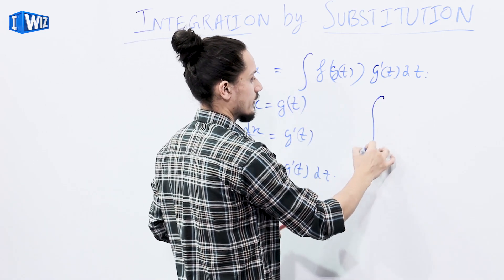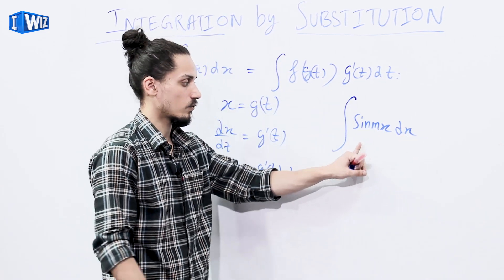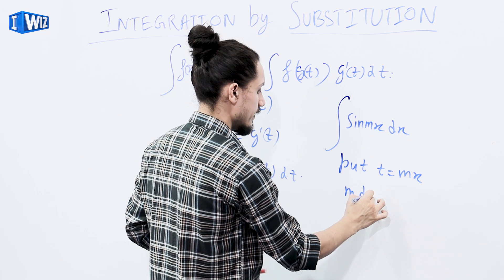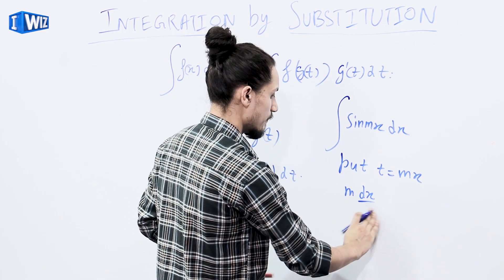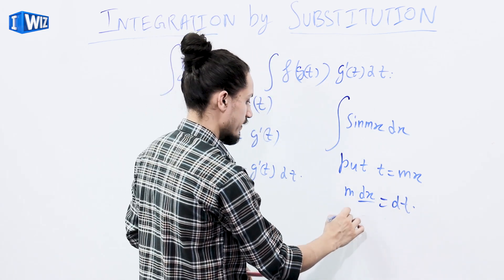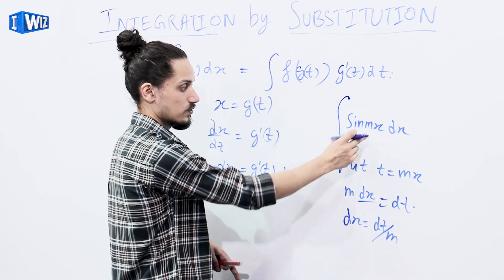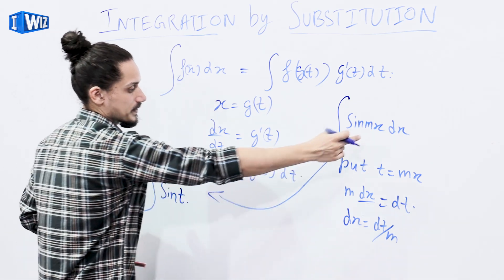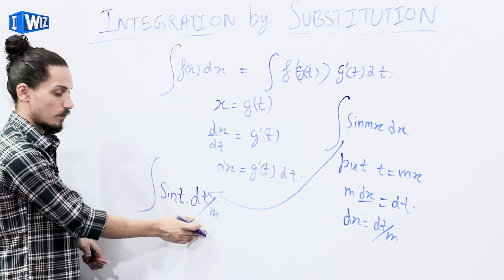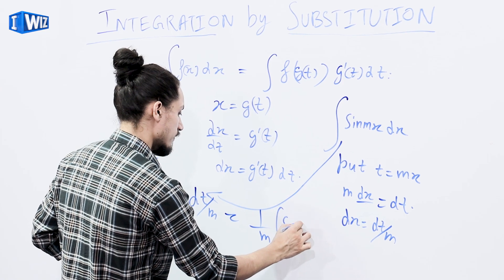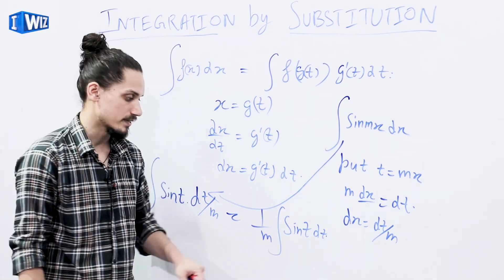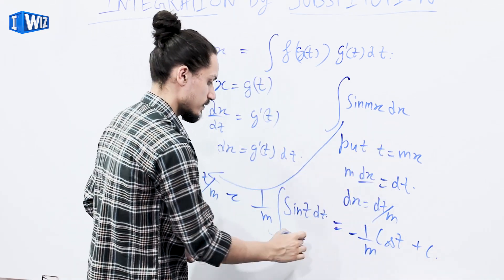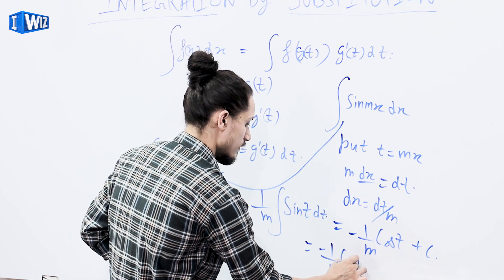For example, suppose we have to find the integral of sin(mx) dx. Put t = mx, so differentiating gives m · dx/dt = 1, meaning m dx = dt, so dx = dt/m. Substituting, we get (1/m) · integral of sin(t) dt. Integration of sin t equals minus cos t, so we have minus (1/m) cos t + C. Substituting back t = mx, we get minus (1/m) cos(mx) + C.